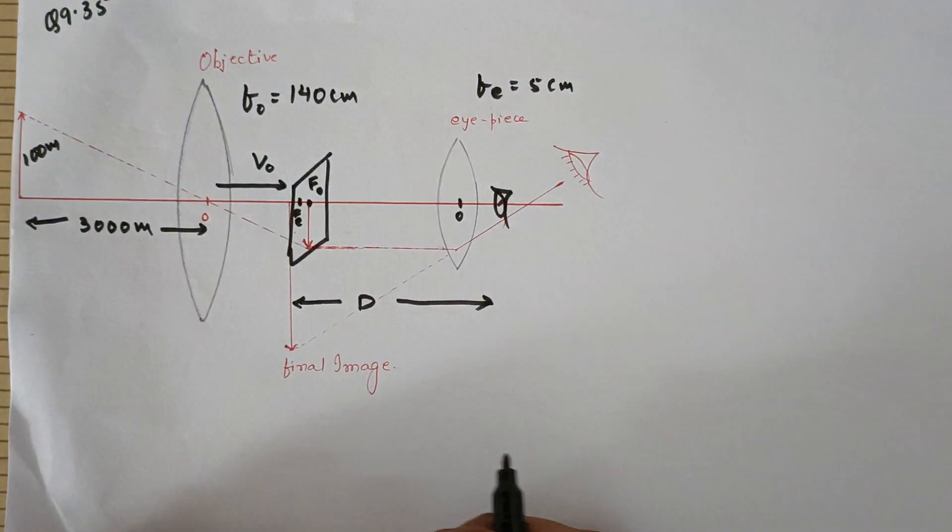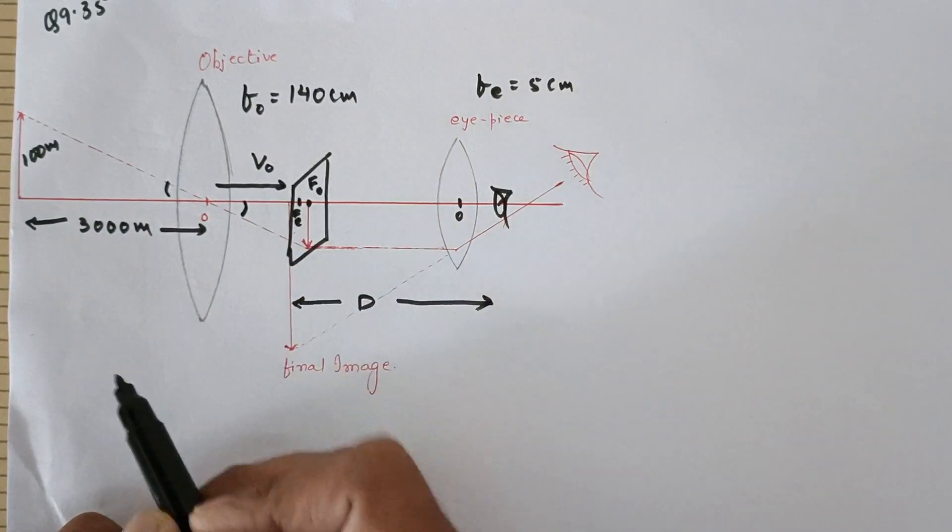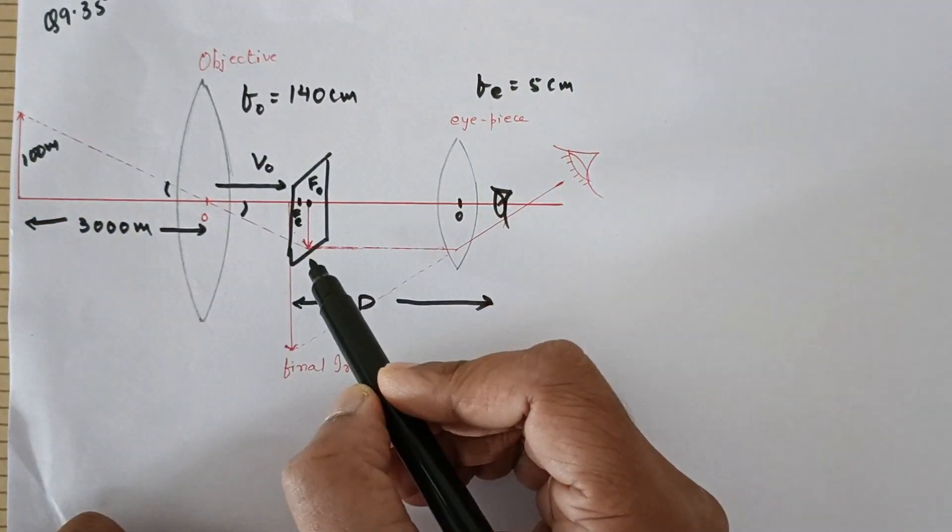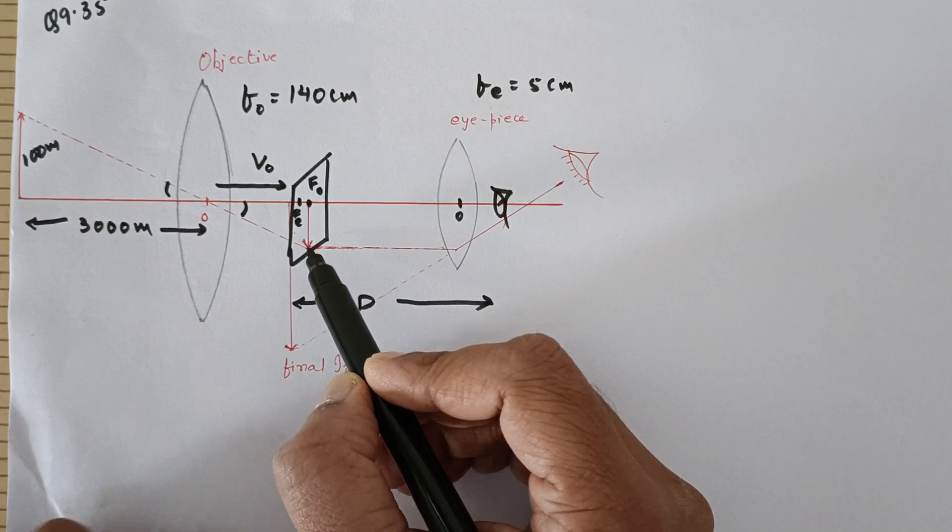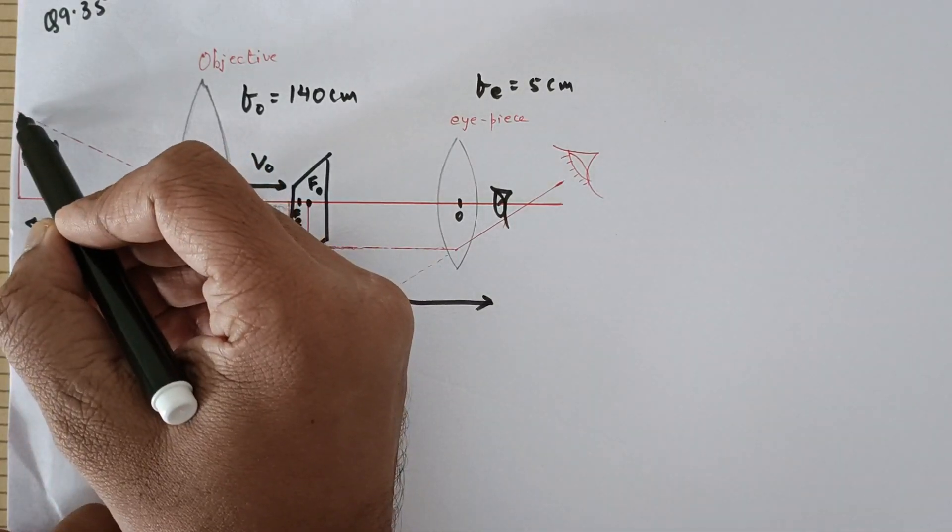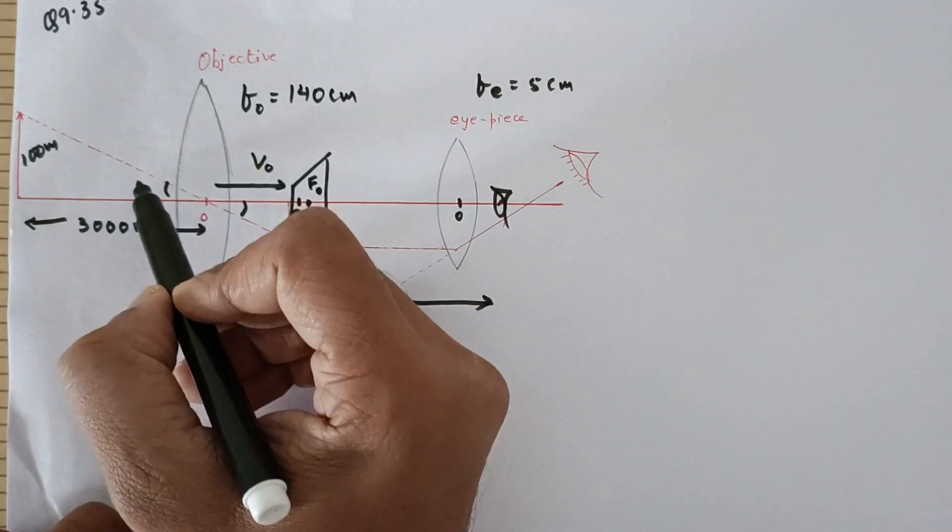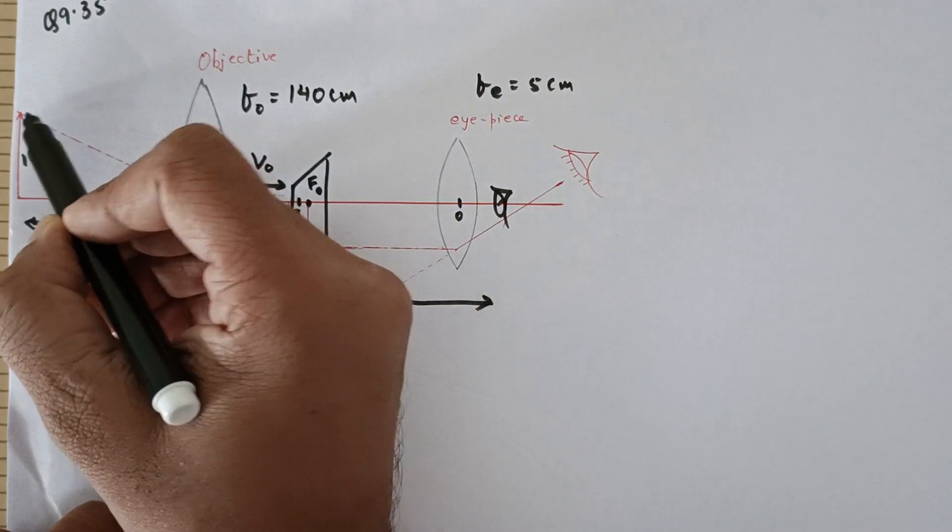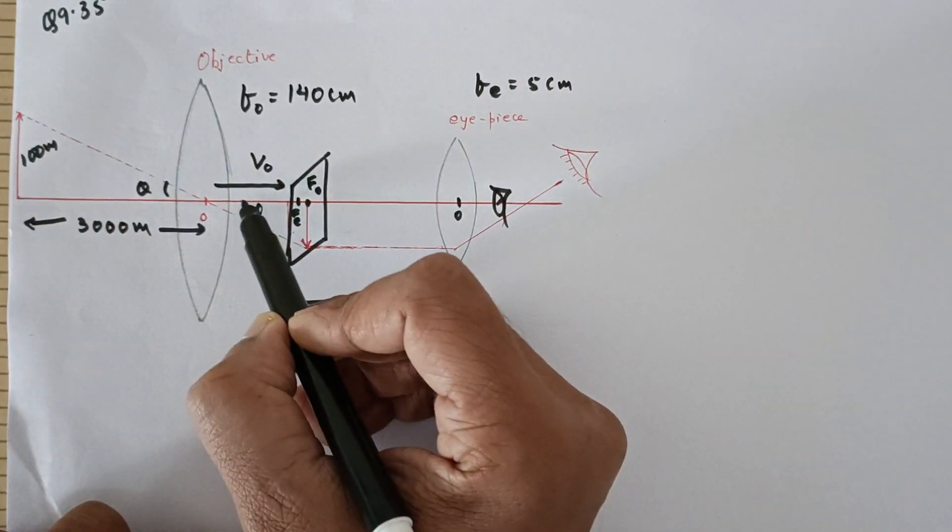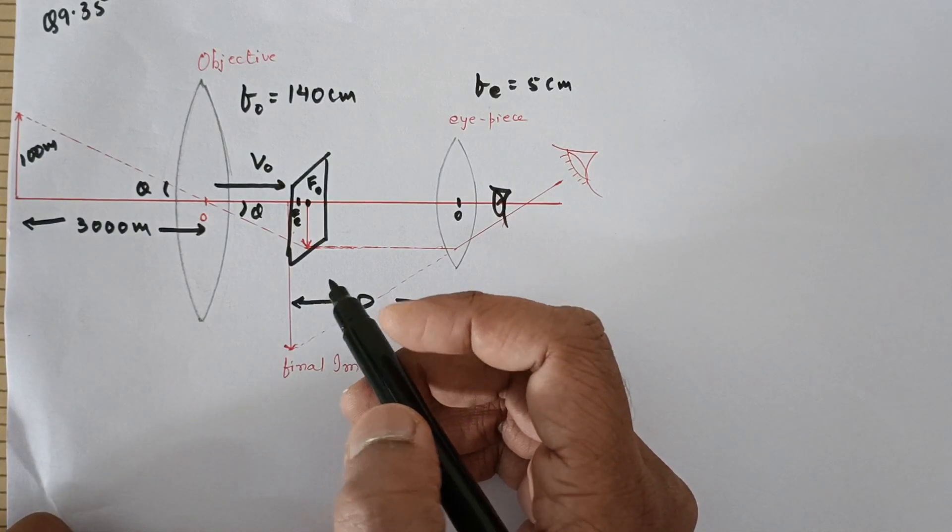Now what is the logic here? These two angles are vertically opposite angles because from the object the rays would directly converge to the image. So we know that this triangle and this triangle, if I find tan θ, that is equal to this by this, and tan θ of this, that is this by this, that would be the same.